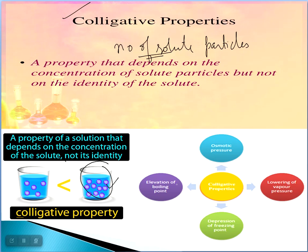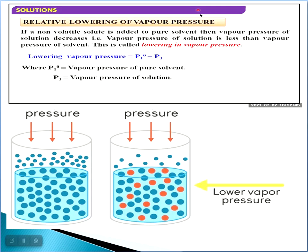There are four types of colligative properties. Number one is relative lowering of vapor pressure. Number two is elevation of boiling point. Number three is depression of freezing point. And number four is osmotic pressure. We will discuss each one by one.